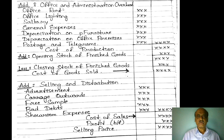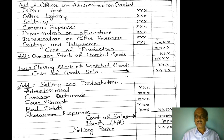Then add office and administration overhead. Office and administration overhead includes office lighting, salary, general expenses, depreciation on furniture, office premises, postage and telegram, and accounting house salary. These are all office and administration overhead.